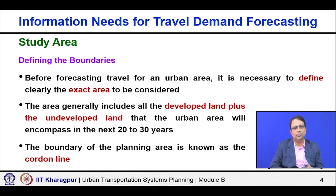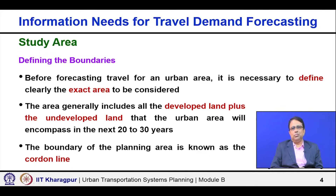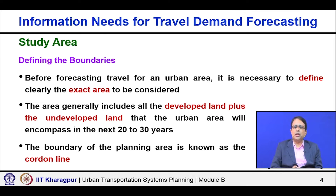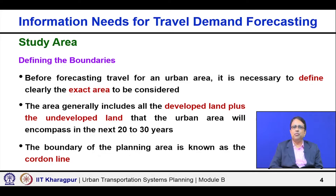First, about the study area. The very first thing that needs to be done is defining the boundaries. What is our study area? We do the transportation planning for an urban area, but we need to define the boundary of that urban area for our four-stage planning purpose. Before forecasting travel for an urban area, it is necessary to clearly define the exact area to be considered.